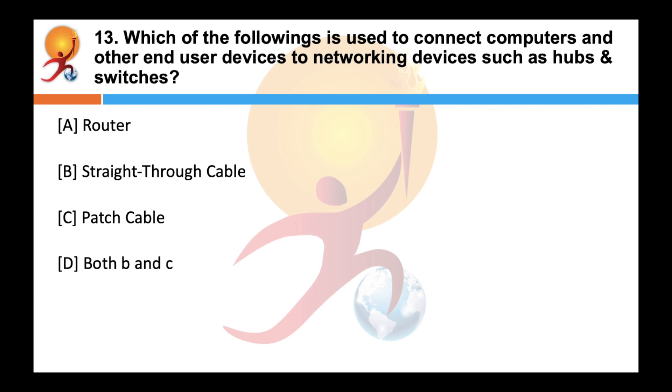Which of the following is used to connect computers and other end user devices to networking devices such as hubs and switches? Correct answer is both B and C. Straight through cable is also referred to as a patch cable. This straight through cable is used to connect computers and other end user devices to networking devices such as hubs and switches. In fact some of these cables can also be used to transfer data between one computer to another.